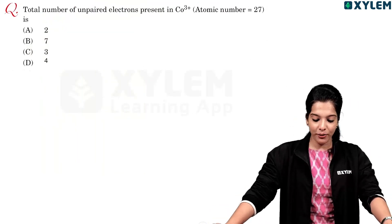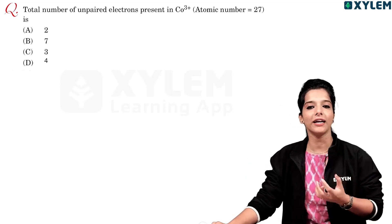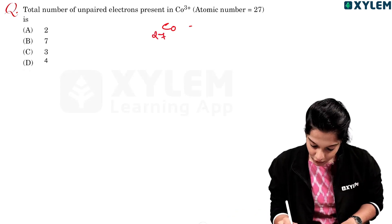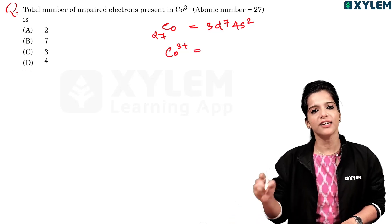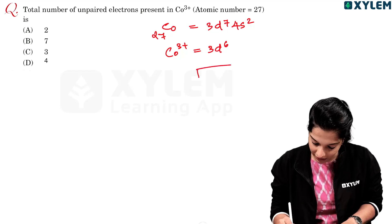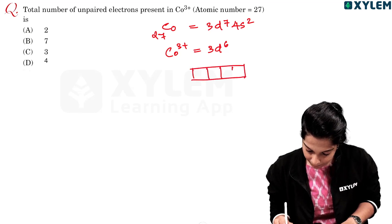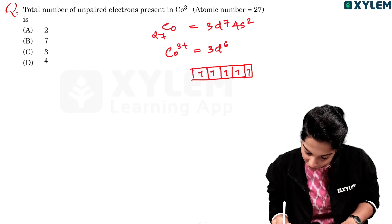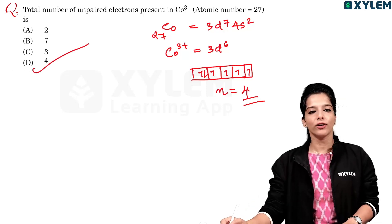The total number of unpaired electrons present in Co³⁺ is dash. Cobalt has atomic number 27, with configuration 3d⁷4s². For Co³⁺, we remove 3 electrons: 2 from 4s and 1 from 3d, giving 3d⁶. For 3d⁶, the number of unpaired electrons is 4. Option D is 4 — correct answer.